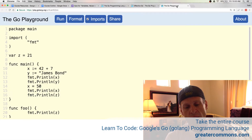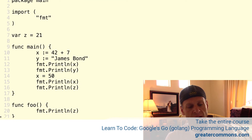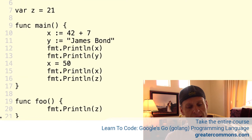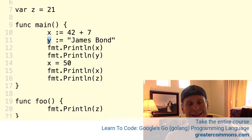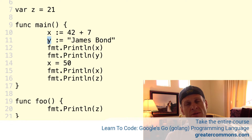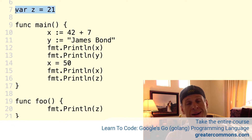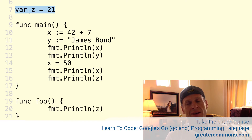So far, the way we've seen declaring variables and assigning values is with the short declaration operator, which allows us to basically assign something to a variable and the compiler will figure out the type. We also did `var z = 21` — again, the compiler figured out the type of the value being assigned.